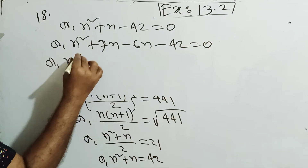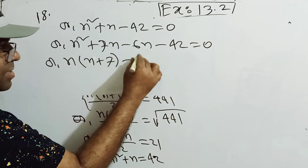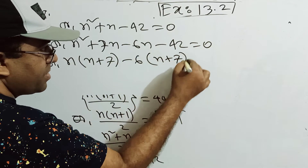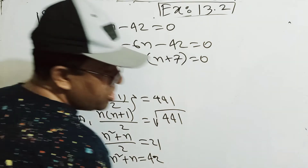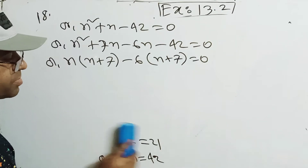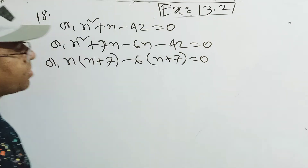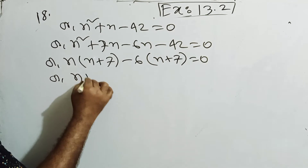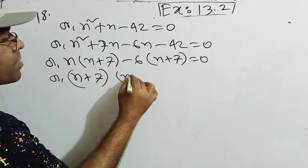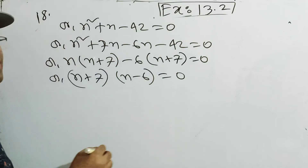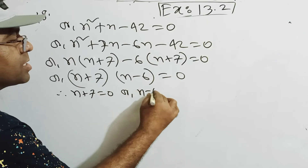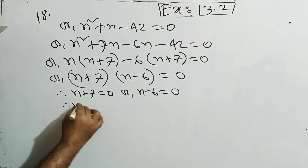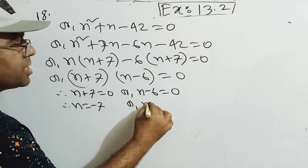So take 1 common: N plus 7, then 6 common: N plus 7. So N minus 6 equals to 0. Either N equals minus 7 or N equals 6.